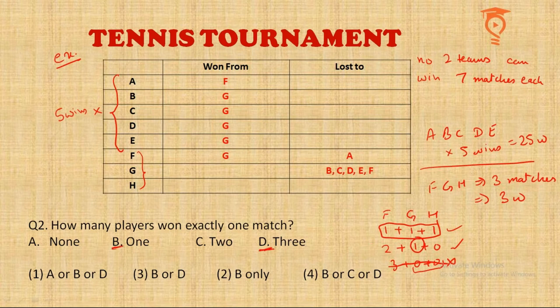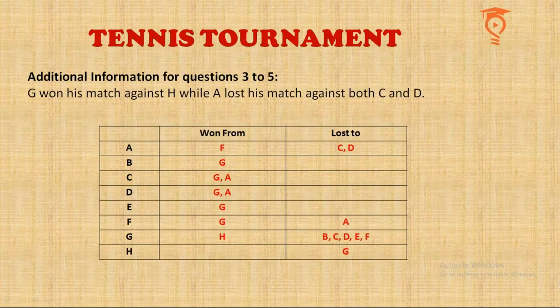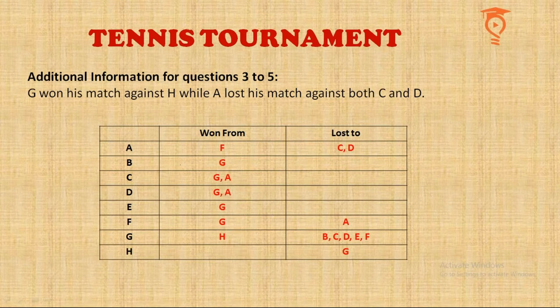So it's either option B or D — the answer says 'B or D.' Two easy questions done. Now we have more information: G won his match against H, while A lost his match against both C and D. From here I started building a table with two columns — every team's wins from other teams and losses to other teams.